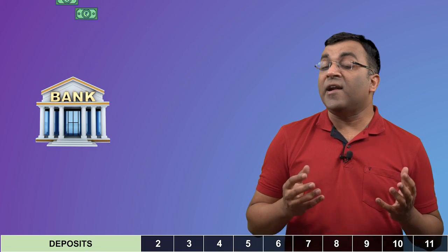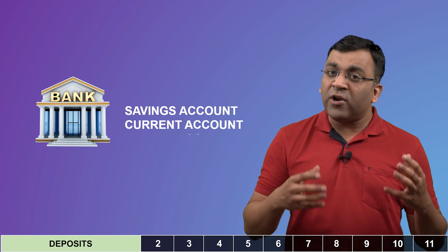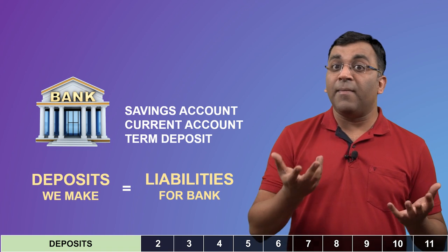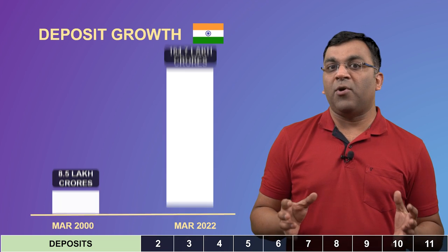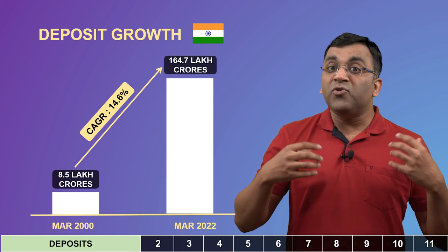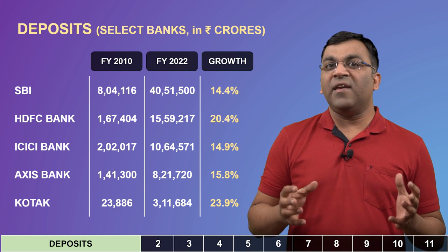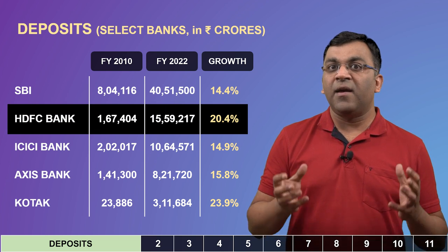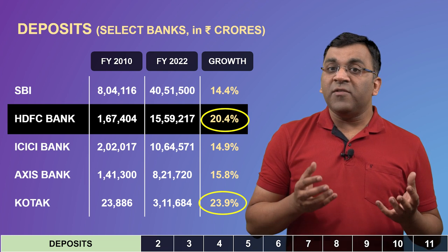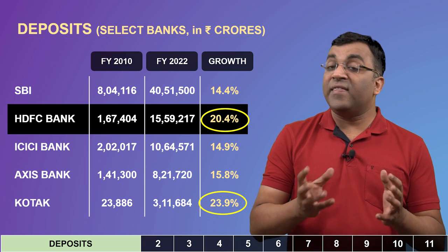We begin with the raw material — everything starts with the money that we deposit in a bank. This money goes into a savings account, a current account, or a term deposit, and the bank is expected to pay us interest on this, which is why this money is tagged as liabilities in the bank's accounting records. Indian banks have seen tremendous growth in deposits over the last two decades — what was just 8.5 lakh crores in the year 2000 has multiplied almost 20 times in 22 years. HDFC Bank has not only come closer to SBI but has also left behind peers like ICICI and Axis Bank. Deposit growth is a key number, and as an investor, you want to give preference to banks whose deposits are growing faster than the industry average.